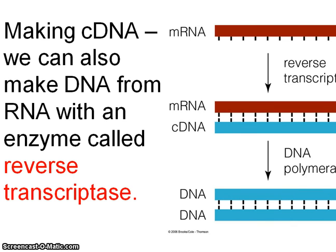Another thing we can do these days is make DNA from RNA. All you have to know about this is that the enzyme used is called reverse transcriptase. Transcription is where DNA is copied to mRNA. Reverse transcriptase does the opposite — it allows DNA to be made from mRNA. So we can even get an mRNA sample and figure out what the DNA code was, because we can work backwards.